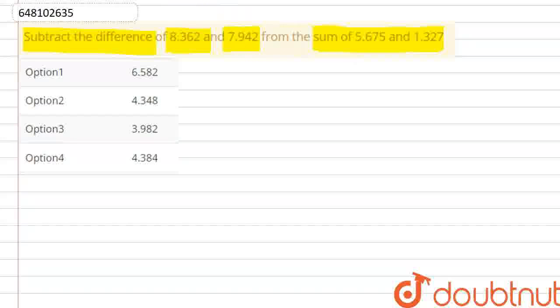We have to subtract here. First, we need to find the sum. The sum is 5.675 and 1.327.